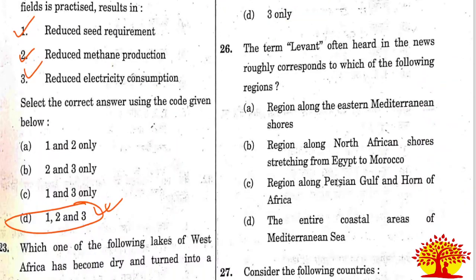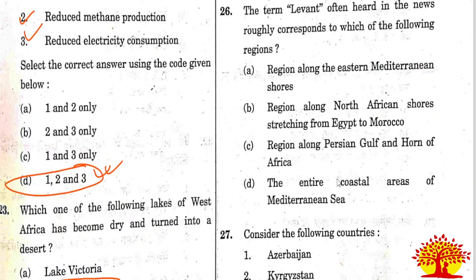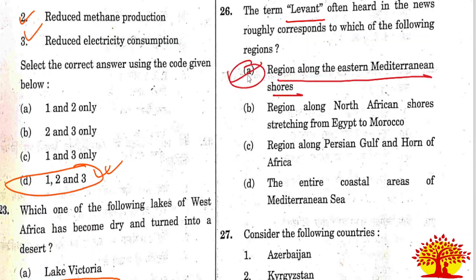Twenty-sixth question: the term 'Levant', often heard in the news, roughly corresponds to which region? It corresponds to the region along the eastern Mediterranean shores. Option A is the right answer.